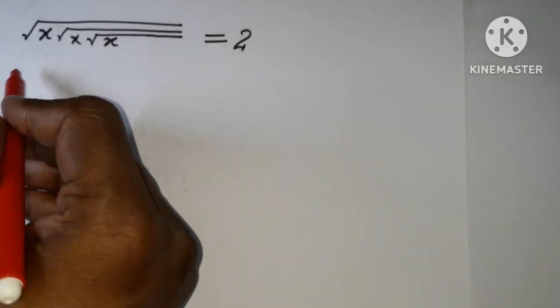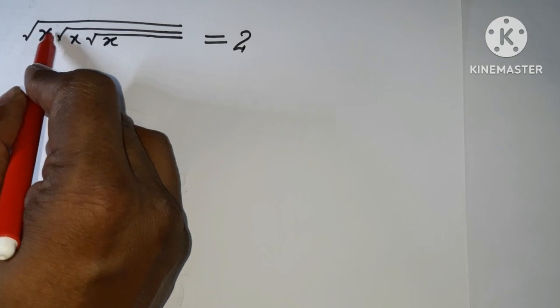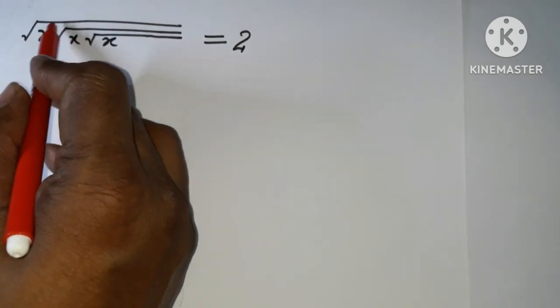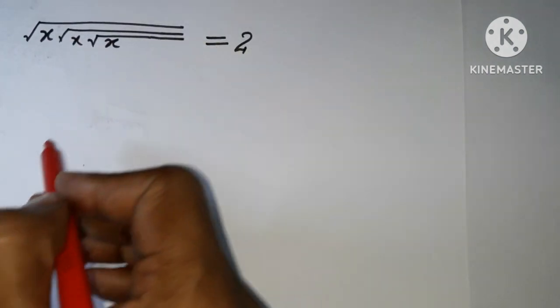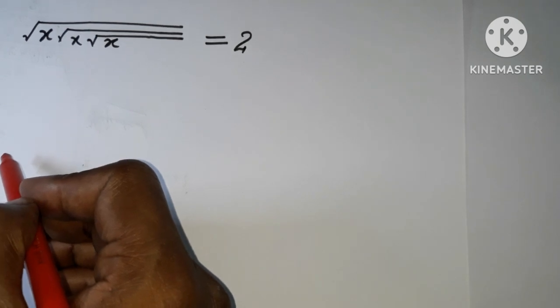Welcome back to Tipall X Learning. Today we have to find the value for x which is under the root x, which is under the root x, and root under x. So root under x, root under x, root under x is equal to 2. We need to get the value for x. How can we proceed?